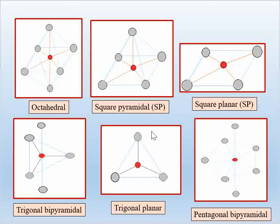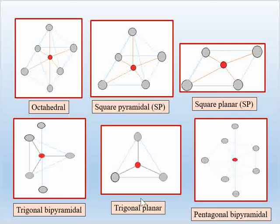The second diagram shows trigonal planar geometry. In trigonal planar geometry, if you remove two ligands from the axial position of the trigonal bipyramidal geometry, you get the trigonal planar geometry, where one metal and three ligands are all on the same plane.